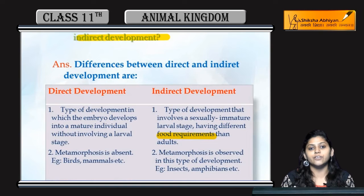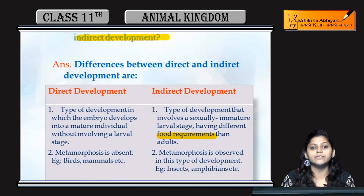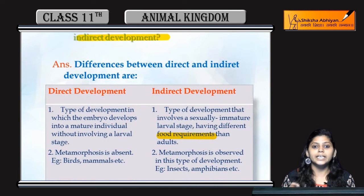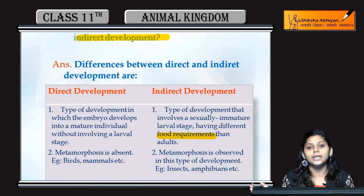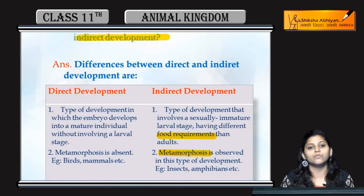The larval stage of frogs is in the water body. There is development through cell division into the adult form. This entire development — from birth to an immature phase and then to adult — is indirect development.